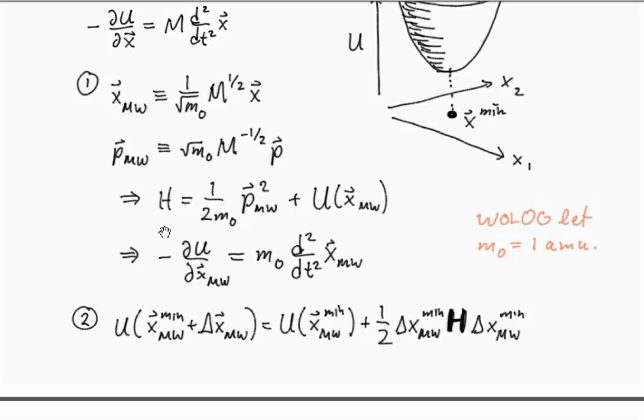So now with this change of variables, the new Hamiltonian takes this very convenient form. Every degree of freedom now has the same mass associated with it in the kinetic energy operator, and our potential energy surface is somewhat stretched, but still is pretty easy to work with.